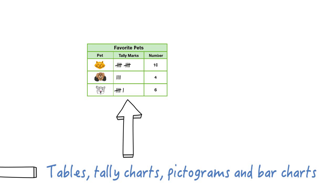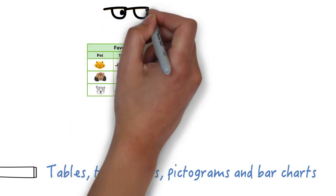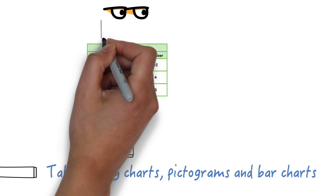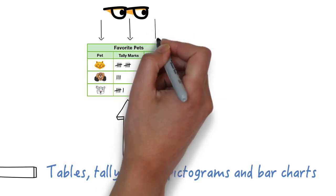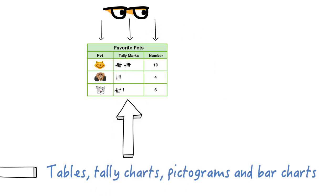This one shows favourite pets. This time you can see three columns, one showing the pet, another showing the tally and another showing the total. When you're filling in a tally chart you ask people the question and then draw one small line for each person. When you have four lines you draw the fifth one going across. This makes it easy to count later on.